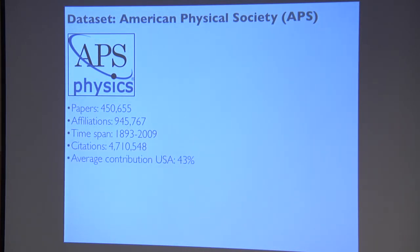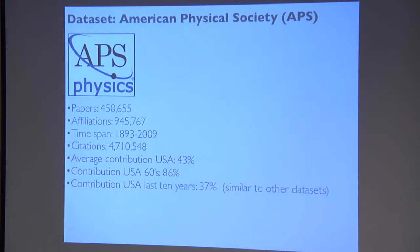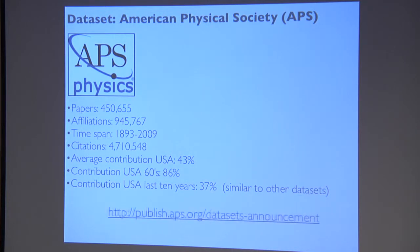Importantly, if you map all papers at the country level, 43% is produced in the US overall, but in the first ten years 86% was produced in the US — very localized. Weinberg, Gelman, and those big figures didn't even bother to put 'US' in their affiliation since it was the American Physical Society. But nowadays, in the last ten years, just 37% of papers are published in the US, similar to what you observe in other databases.